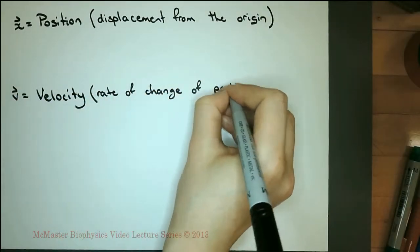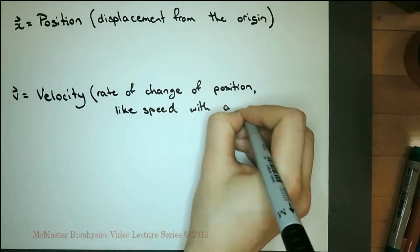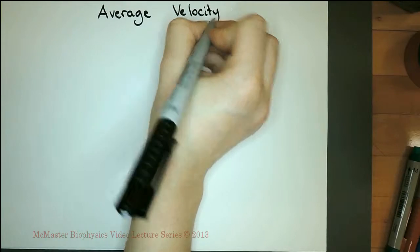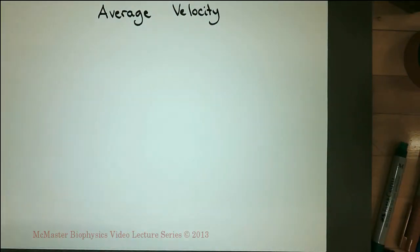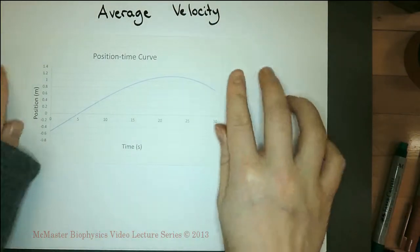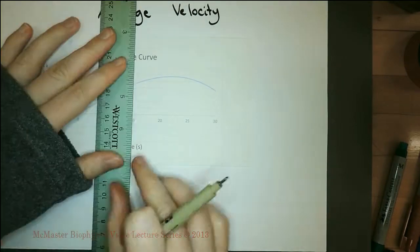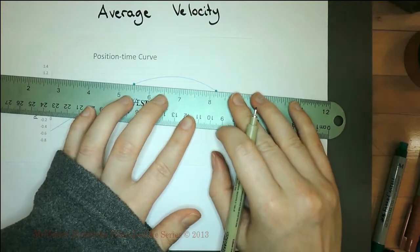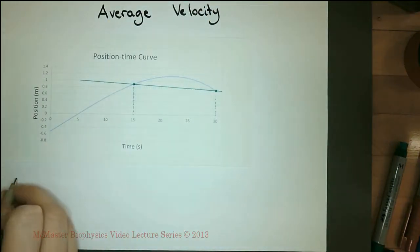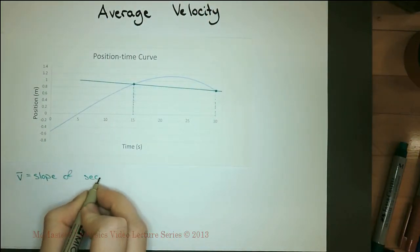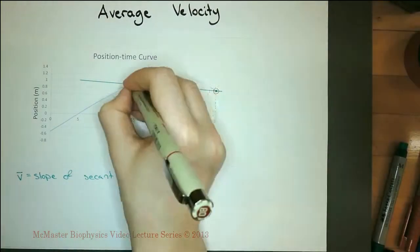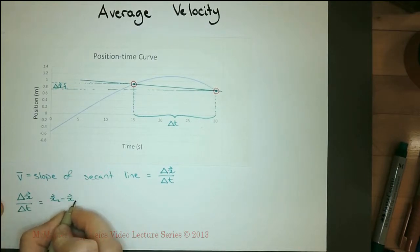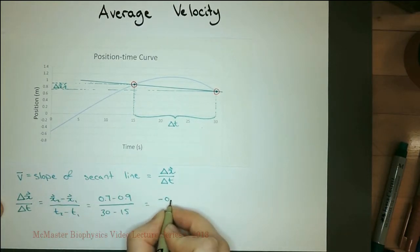Velocity is the rate of change of position. It can be thought of as speed with a direction. From a position-time graph, we can determine the average velocity of the object over a time period. To find the average velocity between 15 and 30 seconds, we mark those points, draw a secant line between them, and find the slope of the secant line. We use the points where the secant line intersects with the curve. This is the average velocity between 15 and 30 seconds.